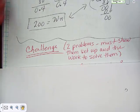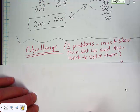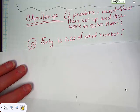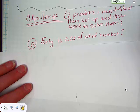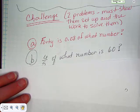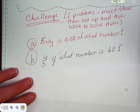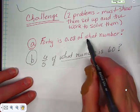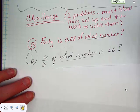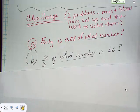And here's your challenge. There are two problems. You must show them set up and then show the work to solve them. These challenge problems, there's two of them. Problem, challenge A is 40 is 0.08 of, or 800 of what number? Problem B is 6 fifths of what number is 60. So, you have a missing there, you have a missing here. Be sure you get it set up right. Come to me with the work and the solutions and we will award you the bonus. Thanks.